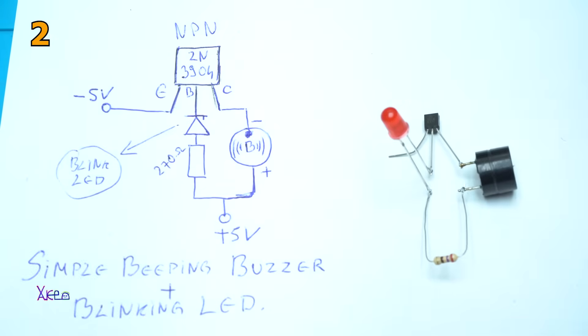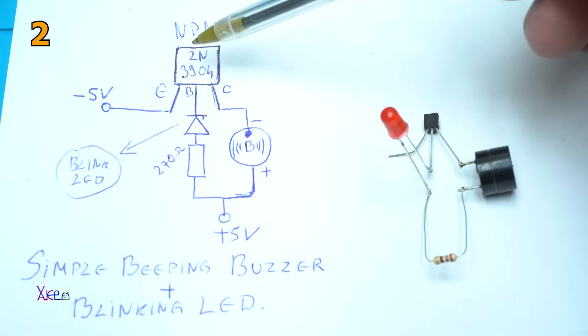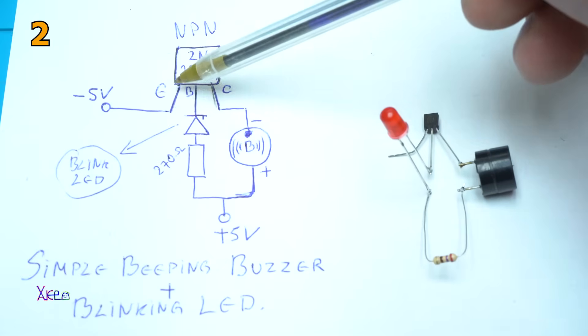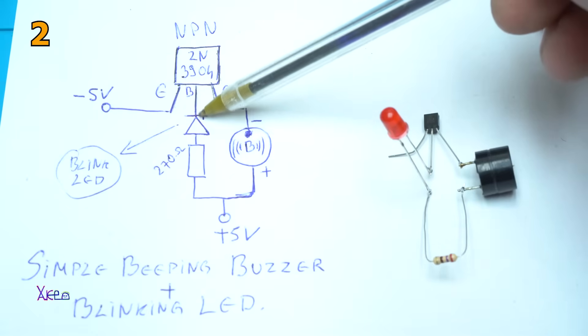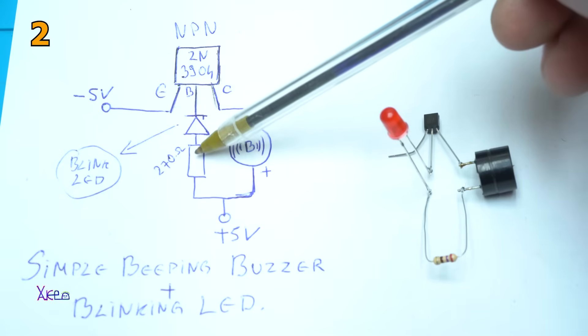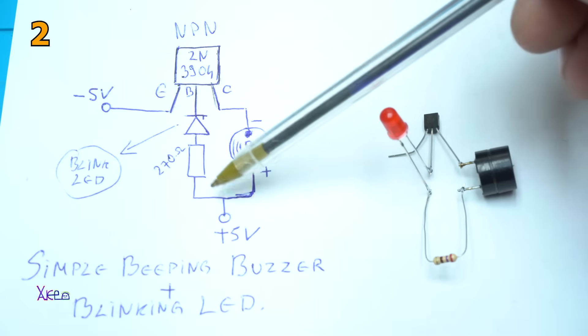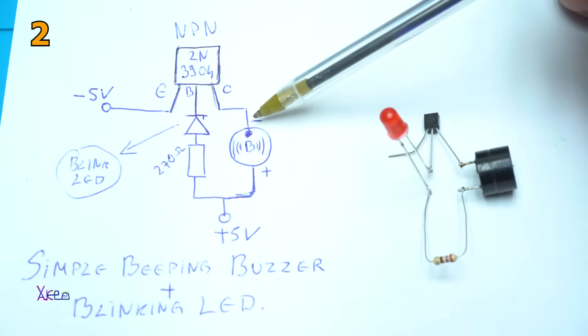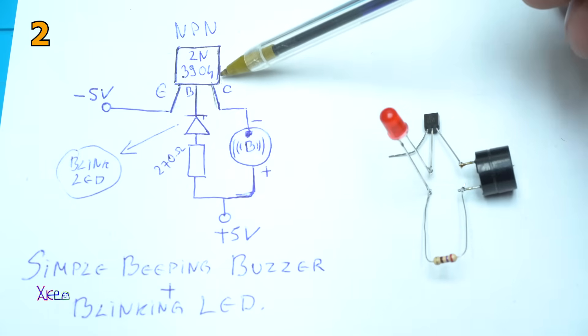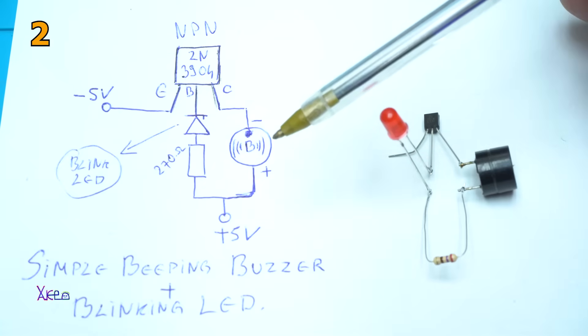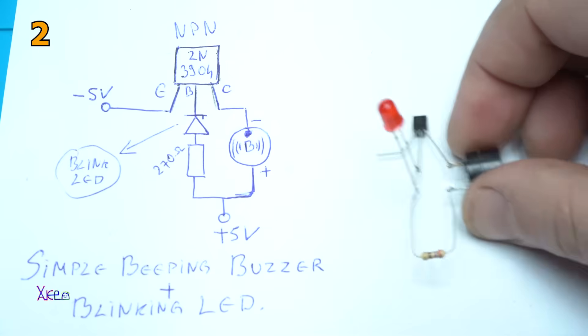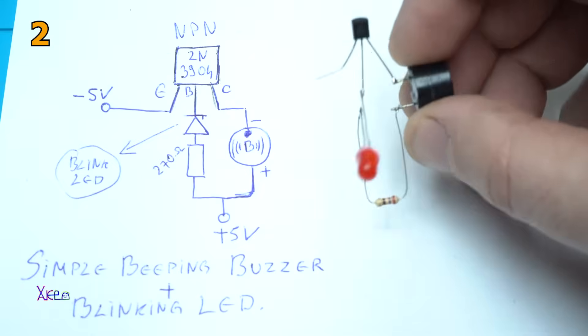If you want to make a beeping buzzer you will need, as I said, an NPN transistor. In this case I'm using 2N3904, and the first leg is emitter, base, and collector. On emitter go 5 volts. On base, the negative side of the blinking LED is connected through 270 ohm resistor to positive power supply. Negative leg from the buzzer goes on the collector of the transistor and the positive goes to the positive. This circuit works on 5 volts. Let me hook up power to see how it's working.